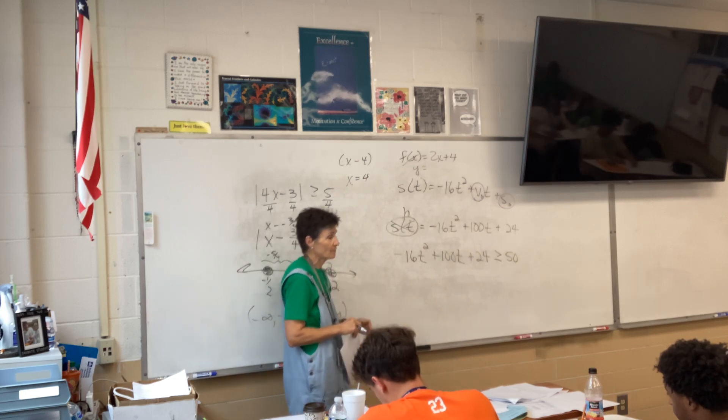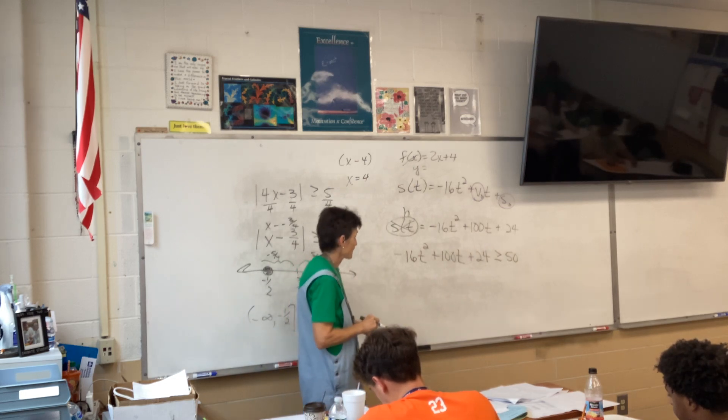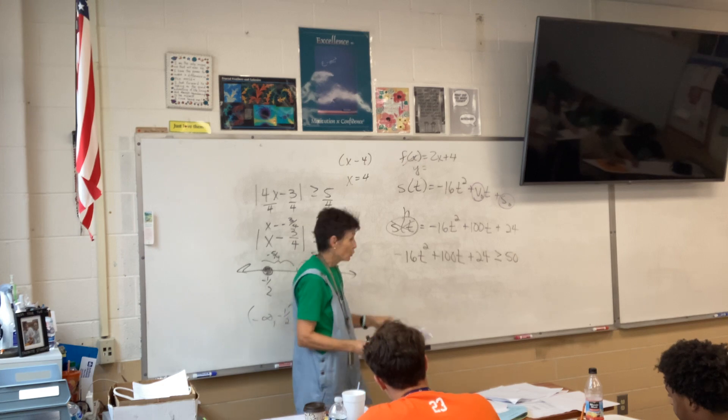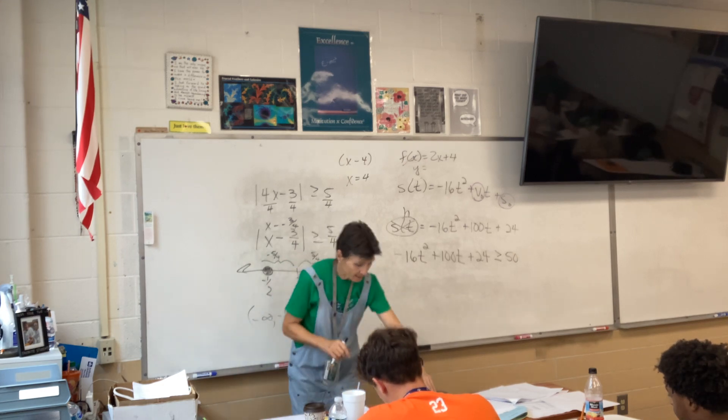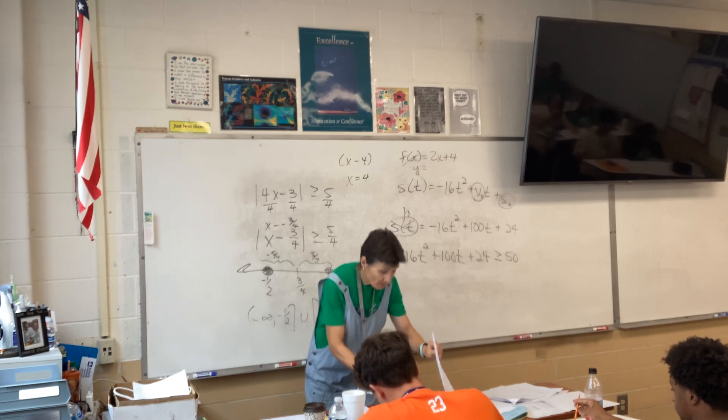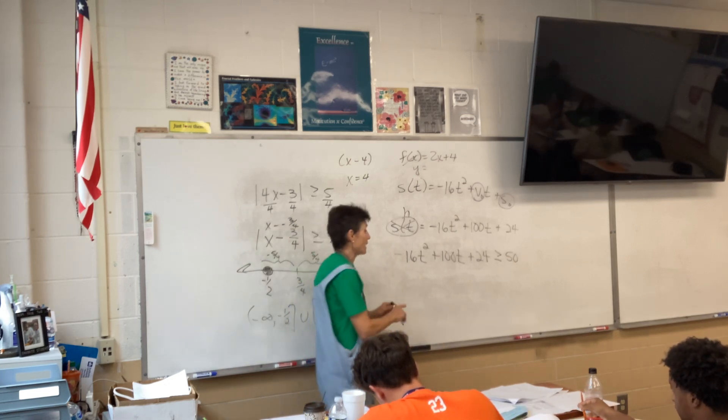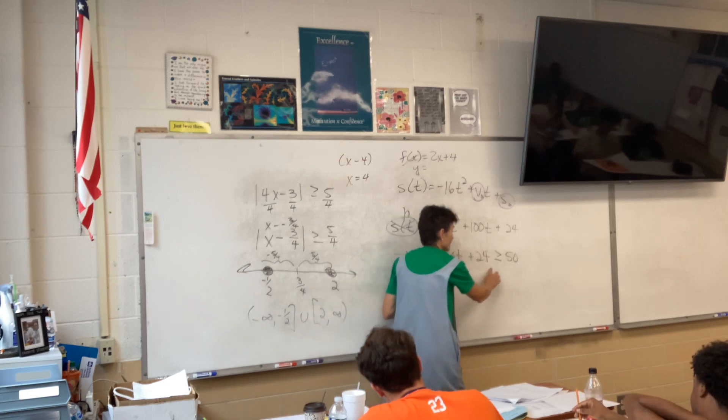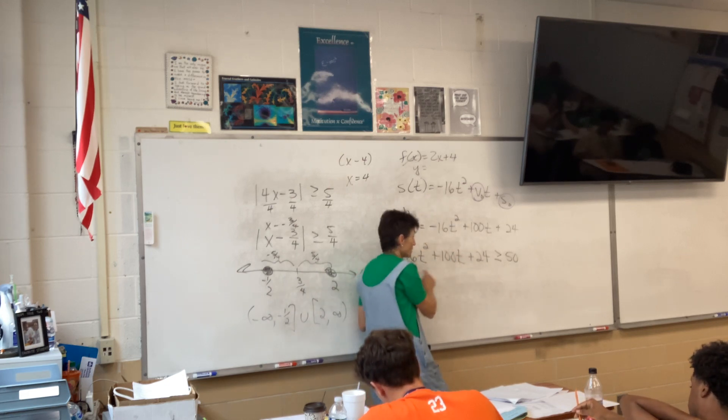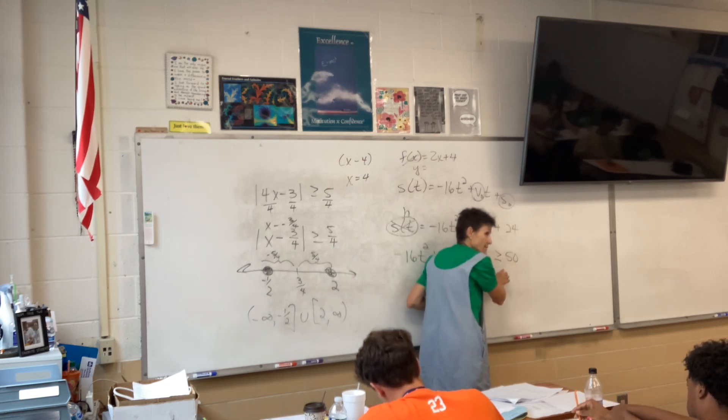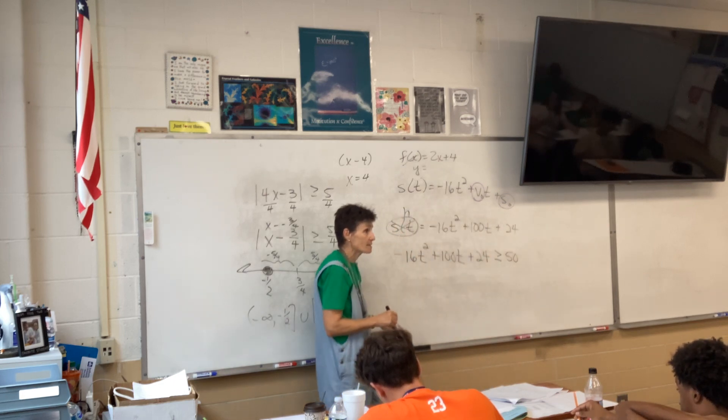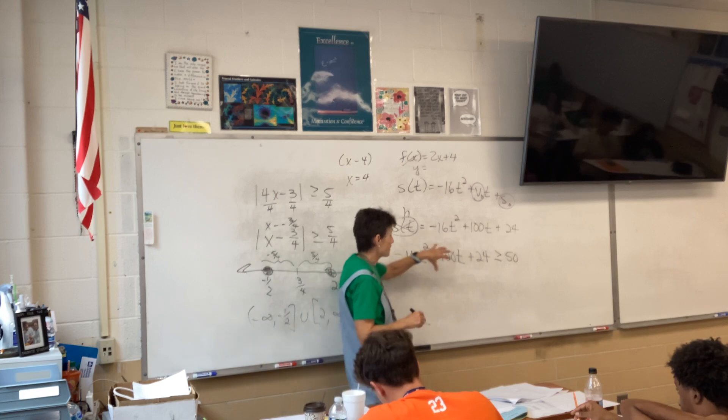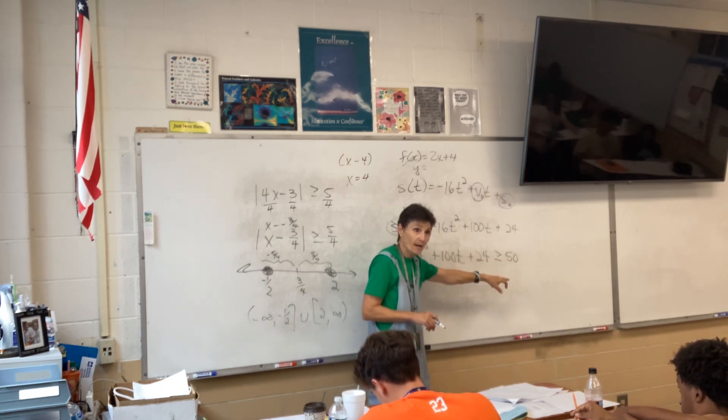I'm going to think about it as h because it's the height above the ground if I'm confused by the function notation. So, my equation involves a height and a time. When will the height be at least 50? Where do I put the 50 in that equation? Right here, right?